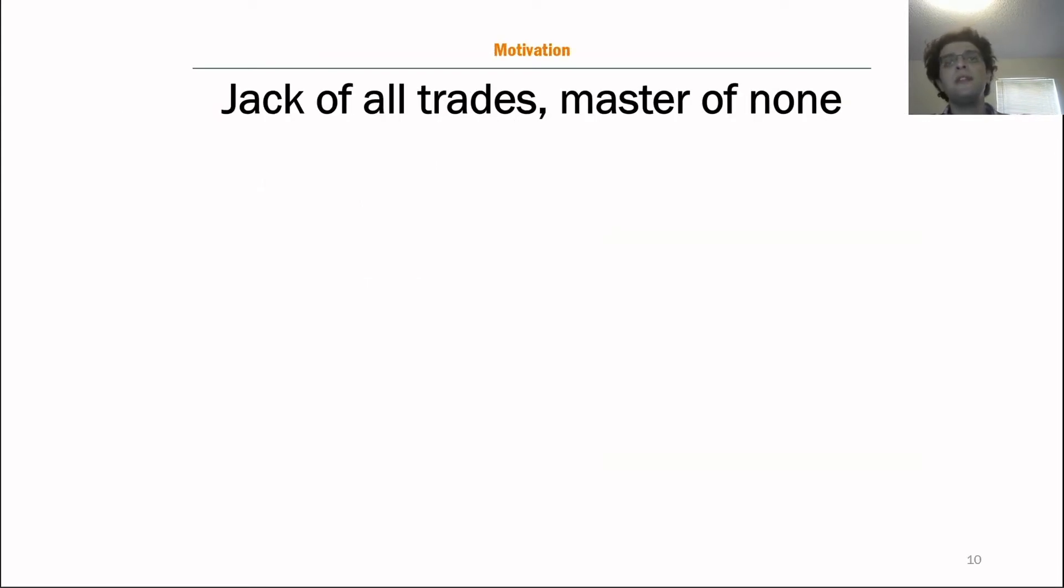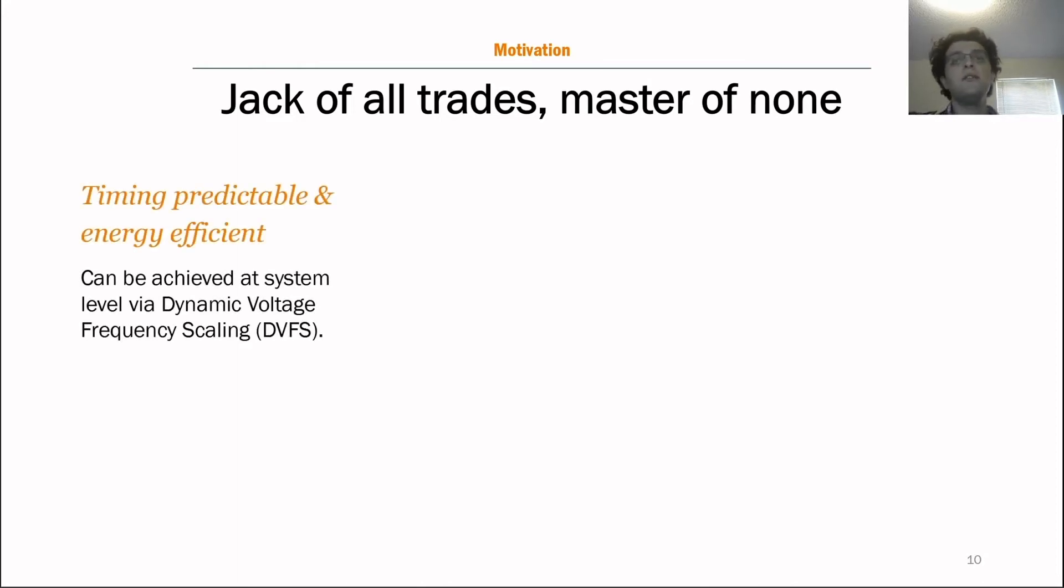So here I want to show you that it is impossible to achieve all three goals at the same time, if you don't get the framework and the operating system involved. First, let's look at our first two goals. Achieving timing predictability while being power-efficient is possible at hardware or system level via adjusting the dynamic voltage frequency scale, or DVFS, configuration of the system. There is a lot of research in this area, which either involves reactive DVFS adjustment at hardware levels, such as NVIDIA's MaxQ, or based on applications characteristics, such as POET.